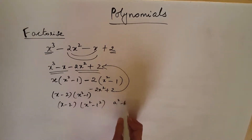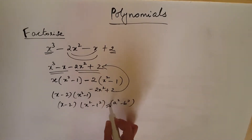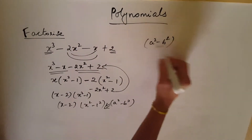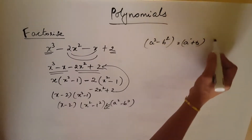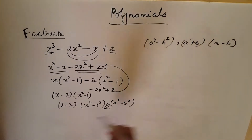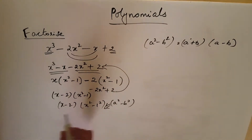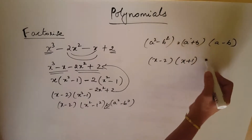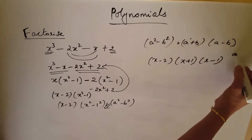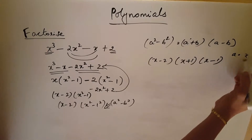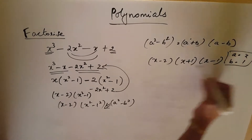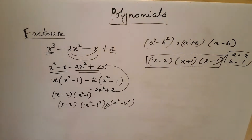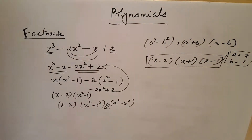x squared minus 1 is x squared minus 1 squared, which is a difference of squares — a squared minus b squared equals a plus b times a minus b. So we write it as x minus 2, times x plus 1, times x minus 1. Here a equals x and b equals 1. This is the answer. Previously we used the trial and error method; this is another method.